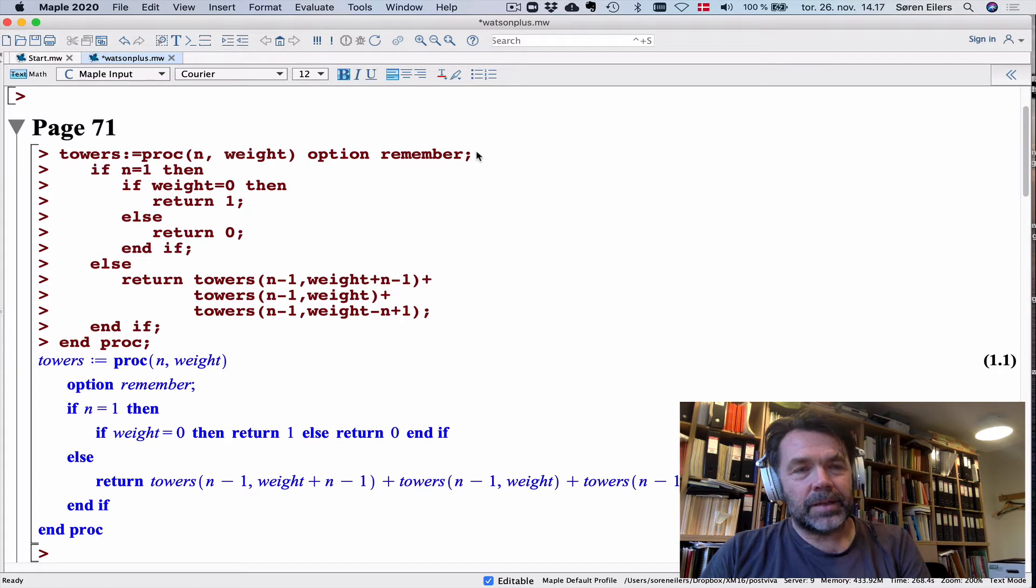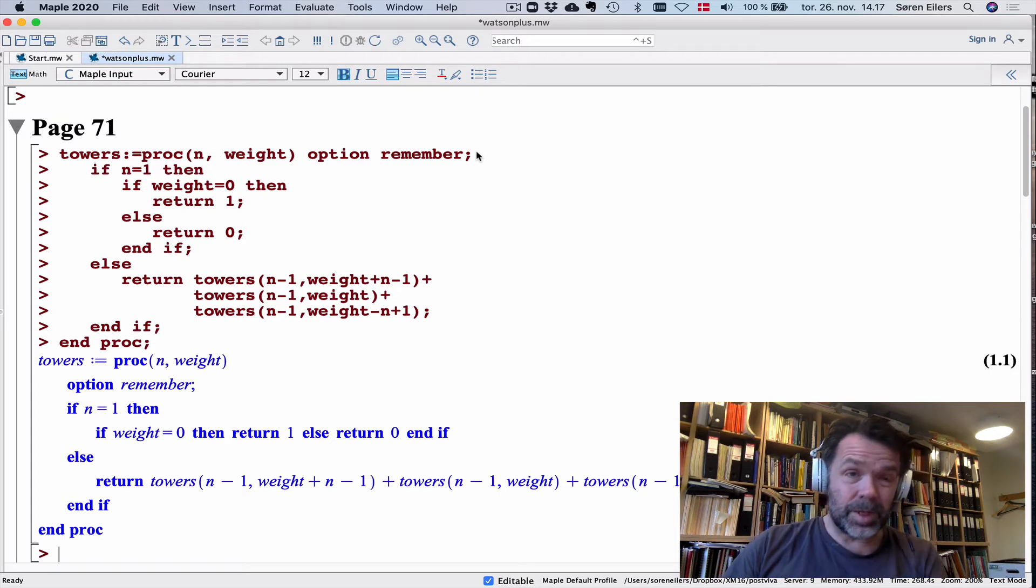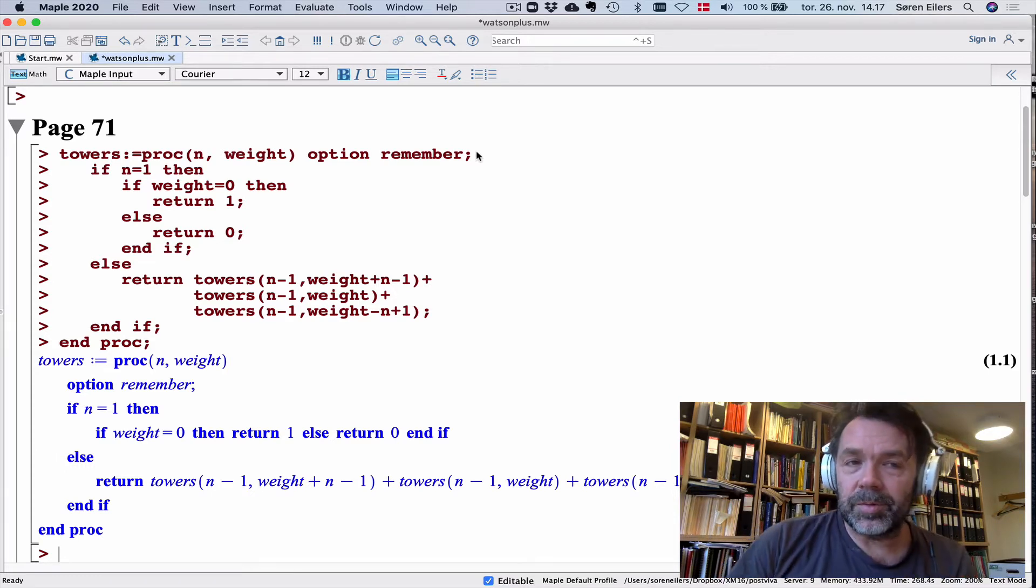The idea is that this is a function that takes two values: n, which is the number of bricks, and the weight. Let me emphasize that the weight is different from the center of gravity. The center of gravity is the average of the centers of gravity of the various bricks. You take the sum of the x-coordinates and divide by the number of bricks. In the weight, I'm not dividing by the number of bricks because that would give me a rational number. It's cleaner to work with the integers as weights.